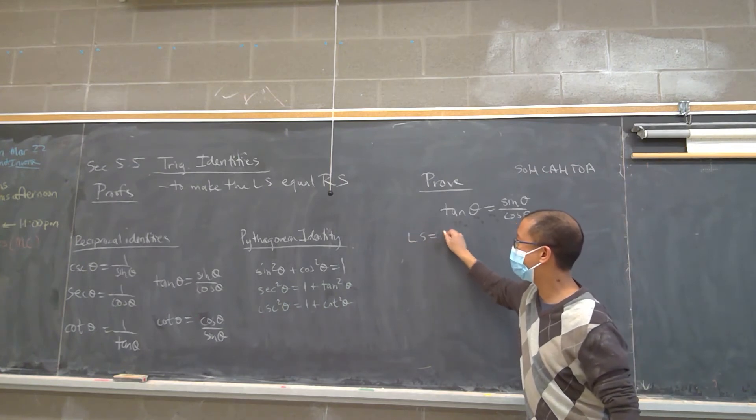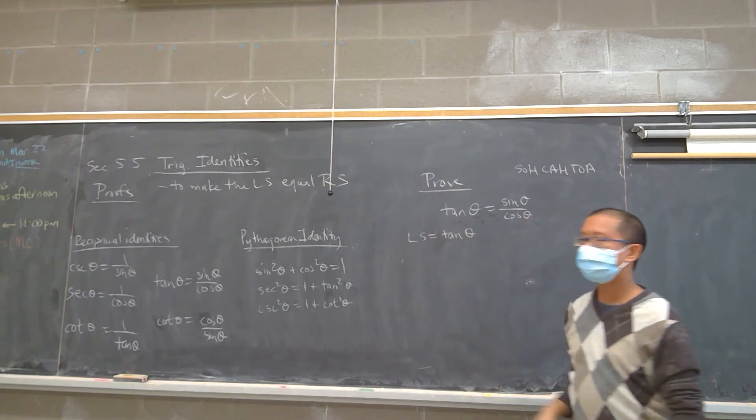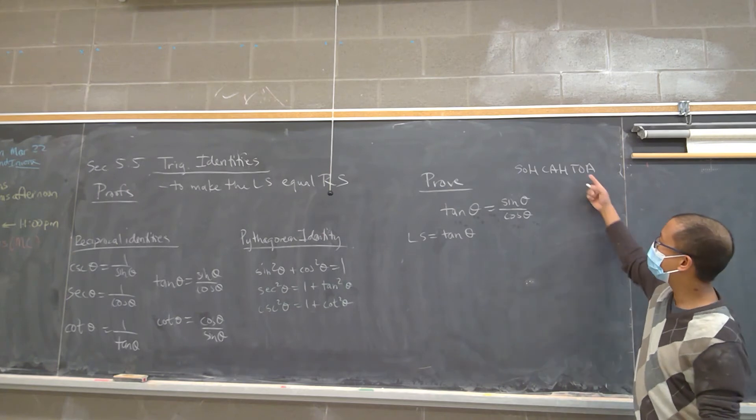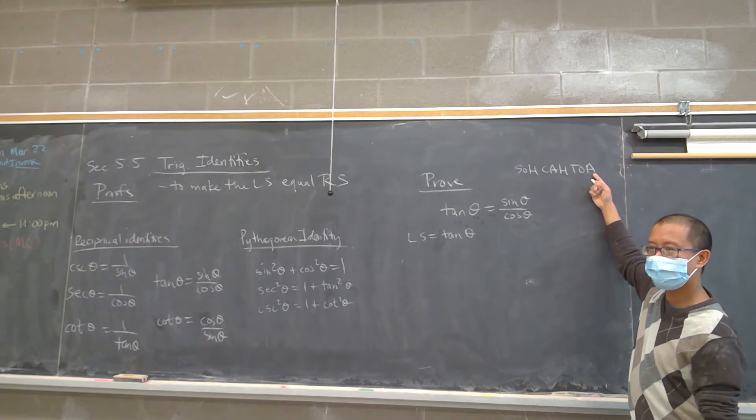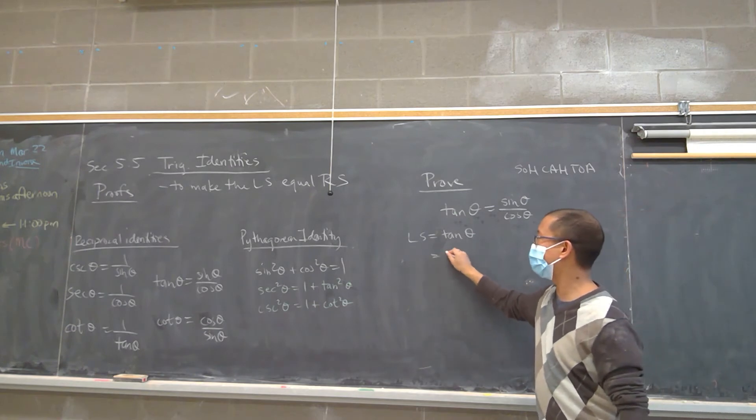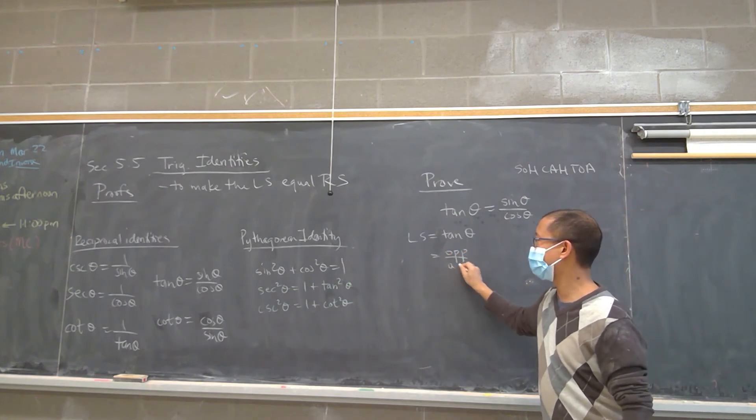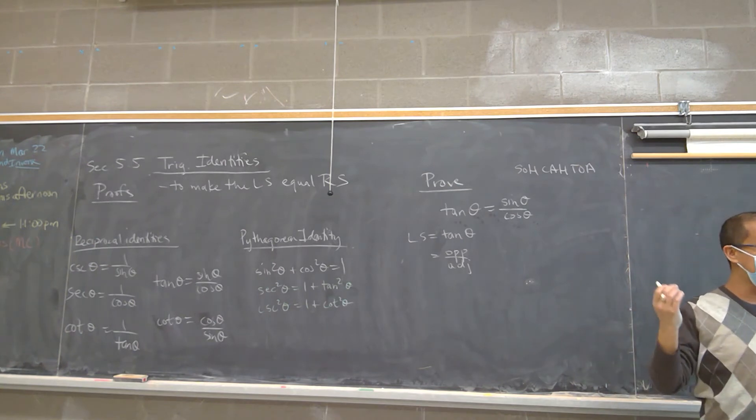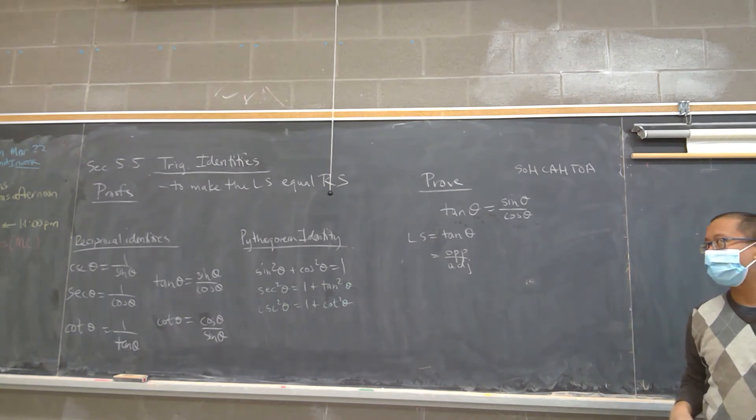If I take the left side of this equation, tan θ by definition is the opposite over adjacent. Everyone agree? So that is the opposite over adjacent. It's not me saying, I didn't do anything. I just wrote its definition. That's great. That's all we're going to say.